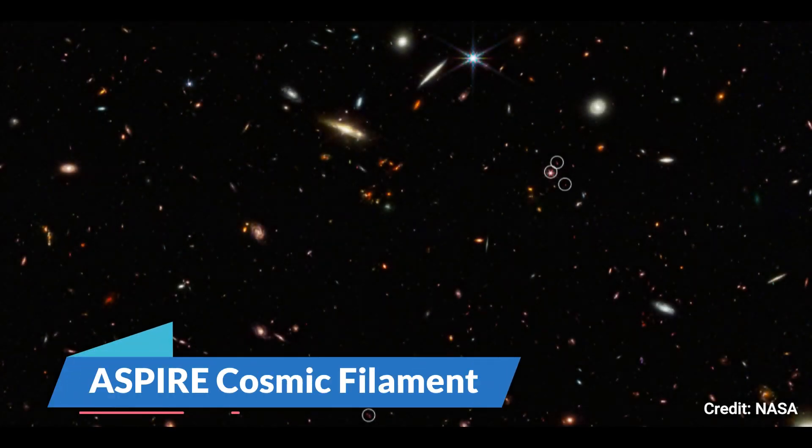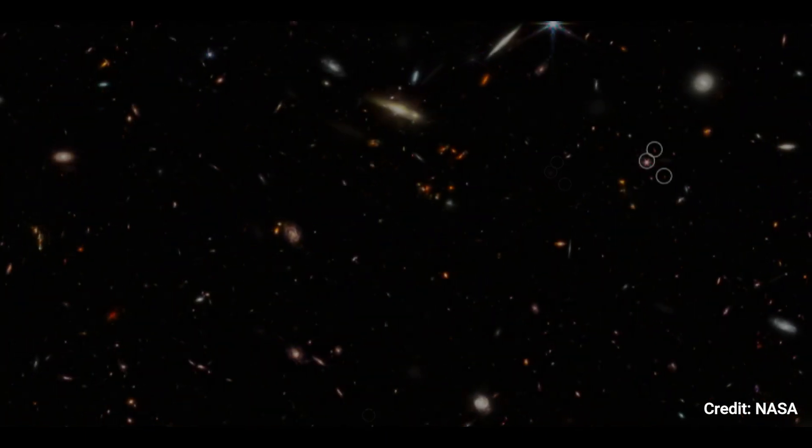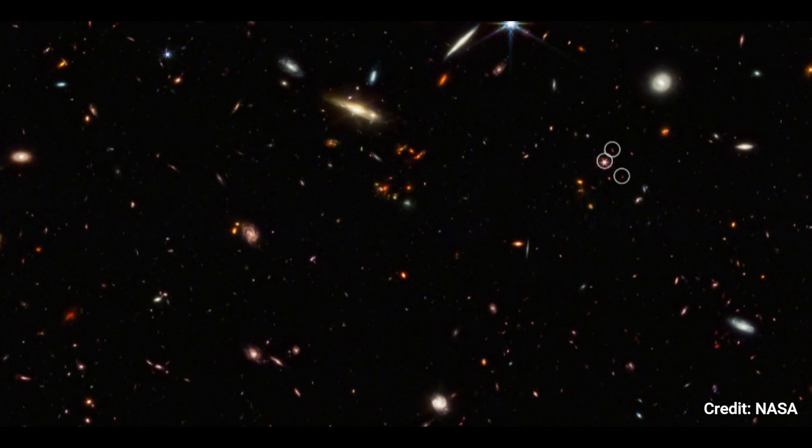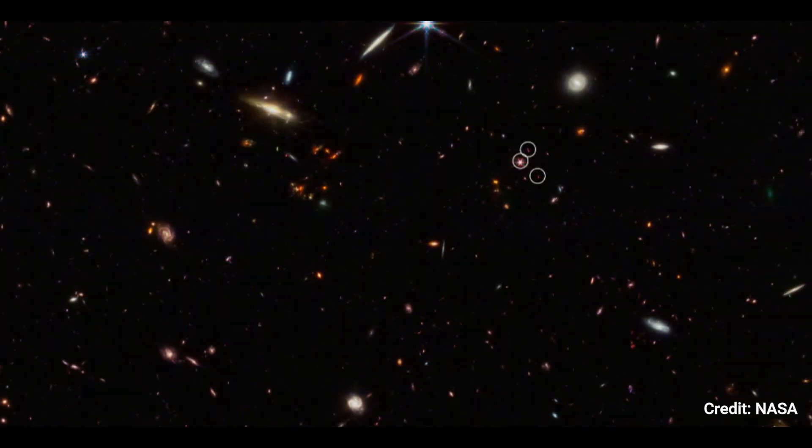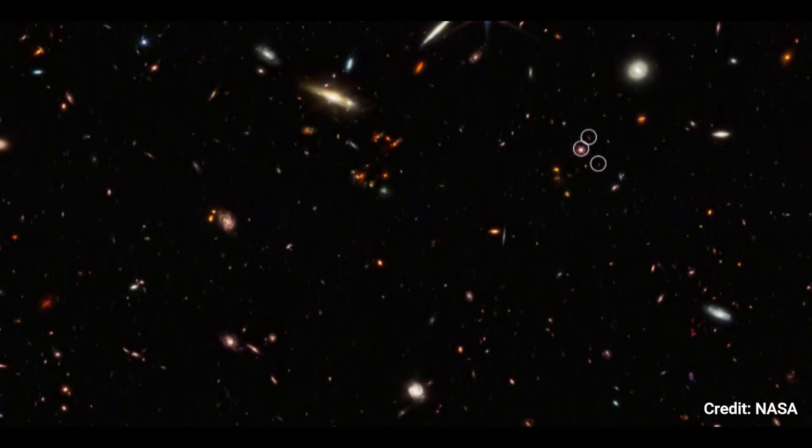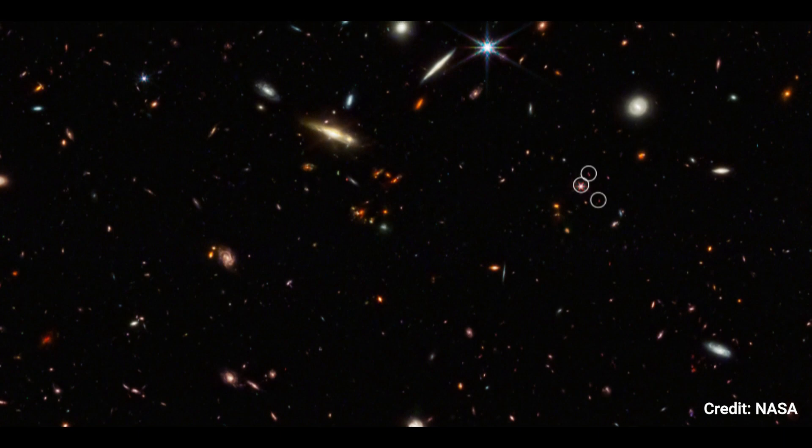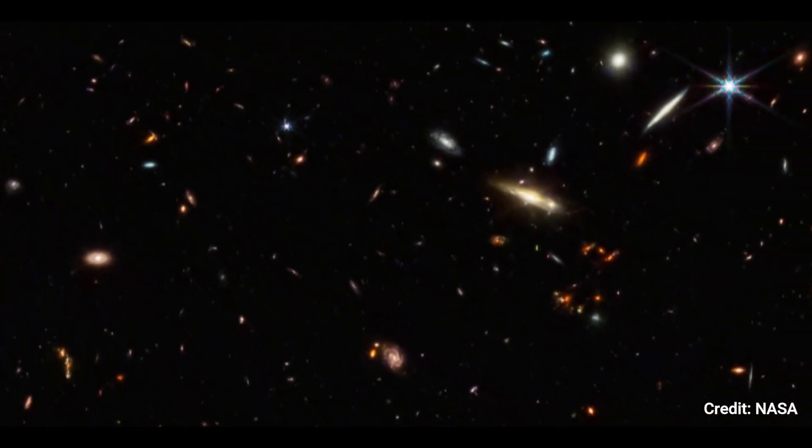Number 3. Aspire Cosmic Filament. Webb's NIRCAM Deep Galaxy Field depicts an arrangement of ten distant galaxies denoted by eight white circles in a diagonal thread-like line. Two of the circles include several galaxies. A very distant and energetic quasar, a galaxy with an active supermassive black hole at its core, anchors this three million light-year-long filament.